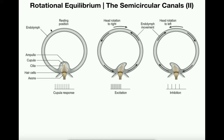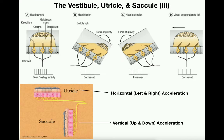Notice what's happening here in the resting position — this would just be anatomical position, still, no movement whatsoever. The cupula is not being moved in either direction, the endolymph — the fluid inside the canal — is not moving, and we have a baseline level cupula response, exactly the same way we had a baseline level utricle and saccule response. It's called tonic or resting activity.